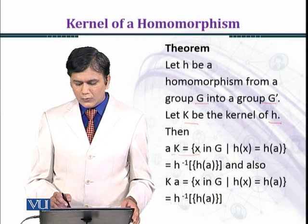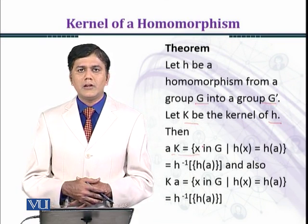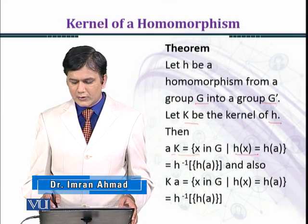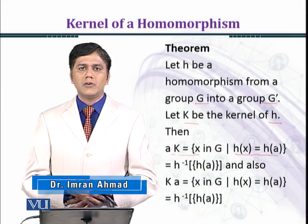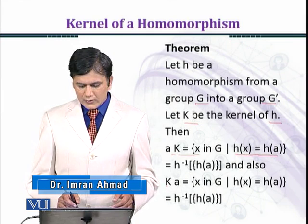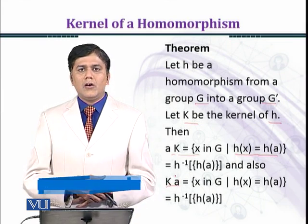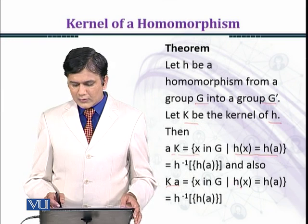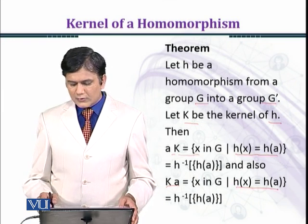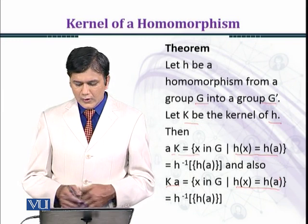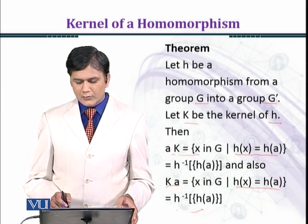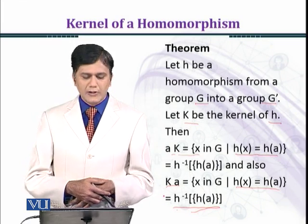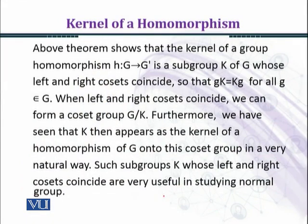Then aK equals the set of all those elements of G which satisfy condition h(x) = h(a), and in the class Ka all those elements of G are lying in this class such that h(x) = h(a). We can write it as the set of all the pre-images of the element h(a).